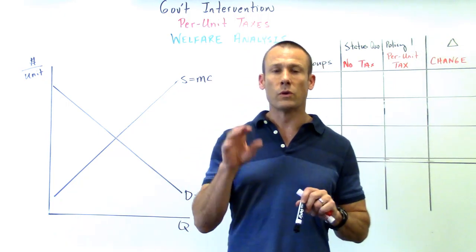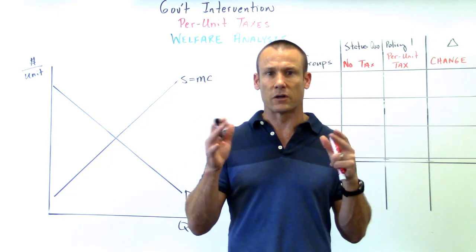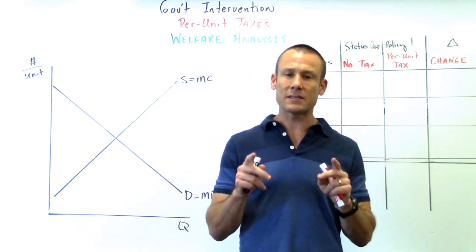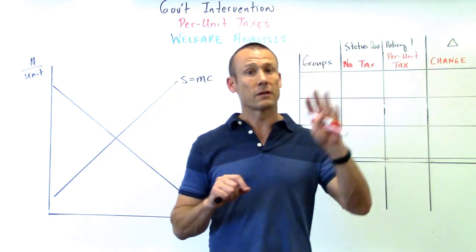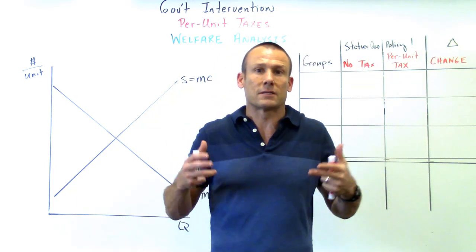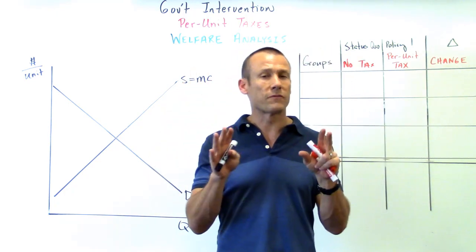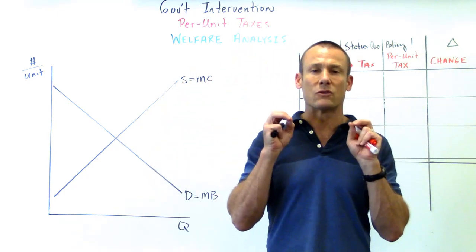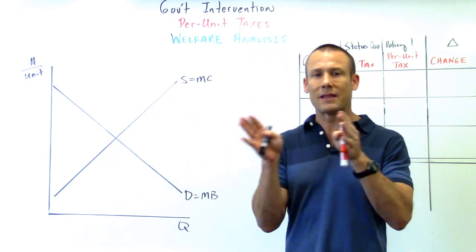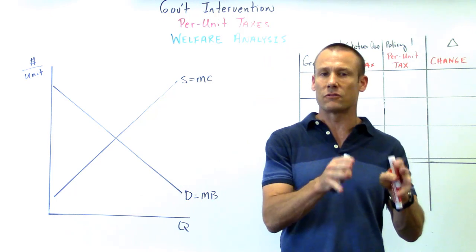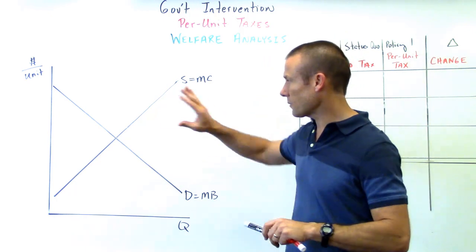Certainly they can hurt social surplus when we have a market where there's no externalities and pretty much everything in the market is functioning well. If that's the case, per-unit taxes absolutely hurt social surplus. But in later videos you're going to see that per-unit taxes can actually help social surplus. For this video, we are in perfect competition with a market that is working well, there's no externalities, and now government levies a per-unit tax on this good.